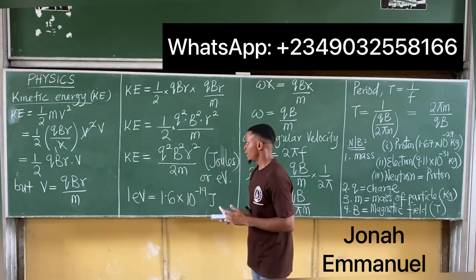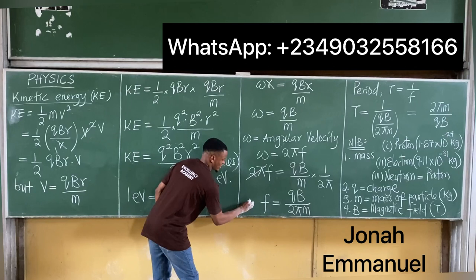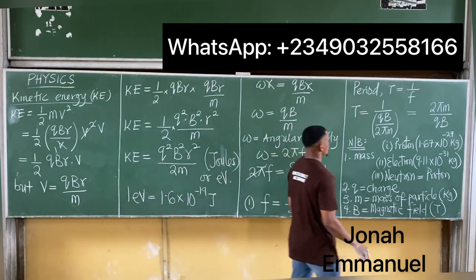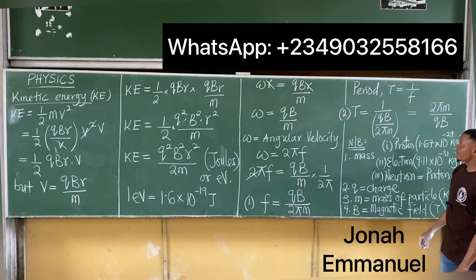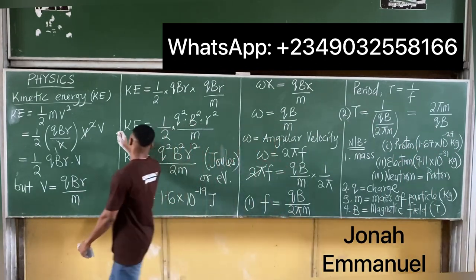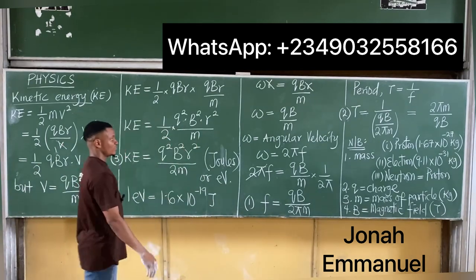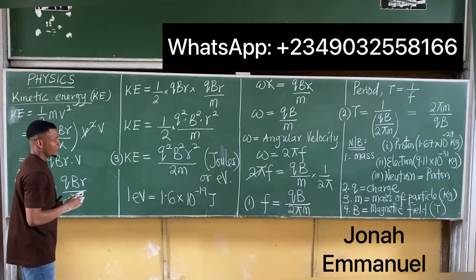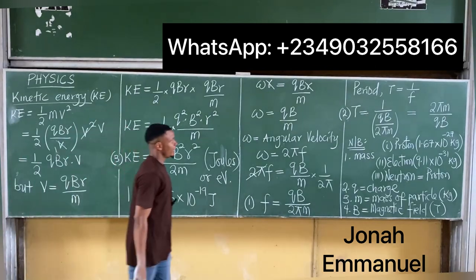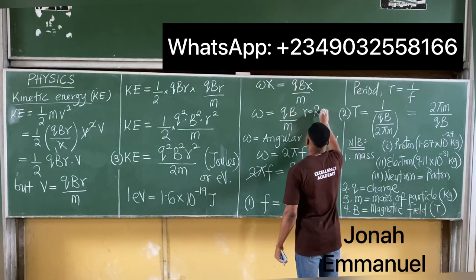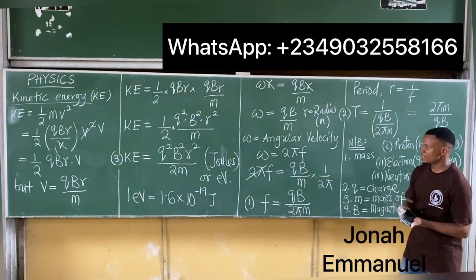So this is all about cyclotrons. The most important formulas are: one, cyclotron frequency f = qB/(2πm); two, period T = 2πm/(qB); three, kinetic energy KE = q²B²r²/(2m). R is simply the radius, measured in meters. We'll now take some examples.